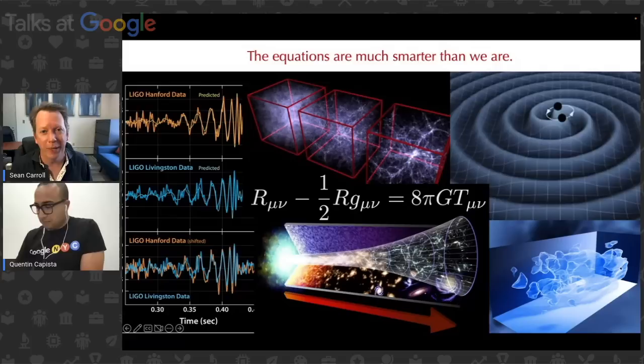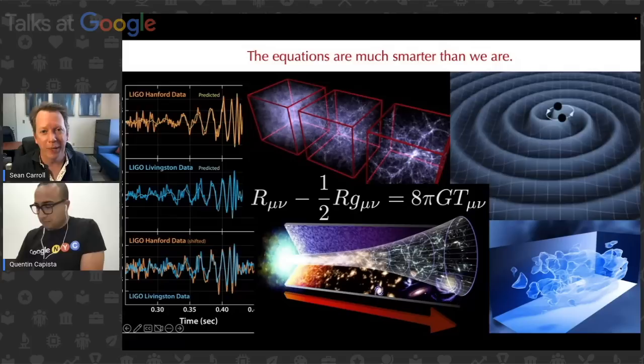That is the best possible place to end this talk — that is the payoff, the culmination. The equations are much smarter than we are. That's why the equations are worth studying. Einstein wrote down his equation not knowing about black holes, but there they were — implicit in his equation. And not only black holes: gravitational waves, the expansion and origin of the universe, dark matter and dark energy, the growth of structure over time — all of this was there in Einstein's equation. That's why it's worth thinking about, even if there are some Greek letters involved. Thank you very much.